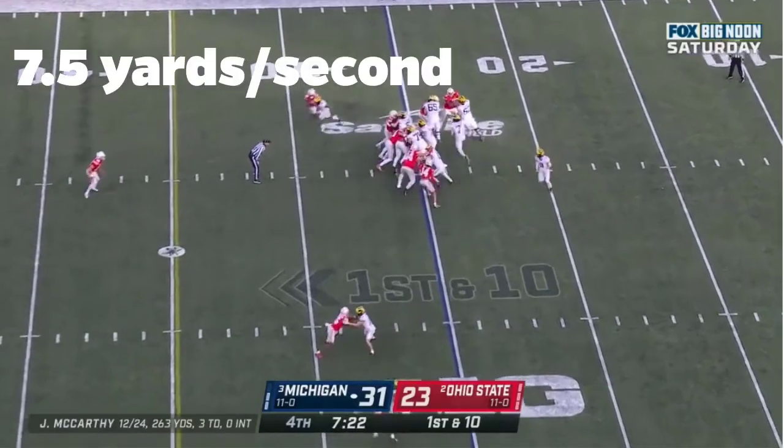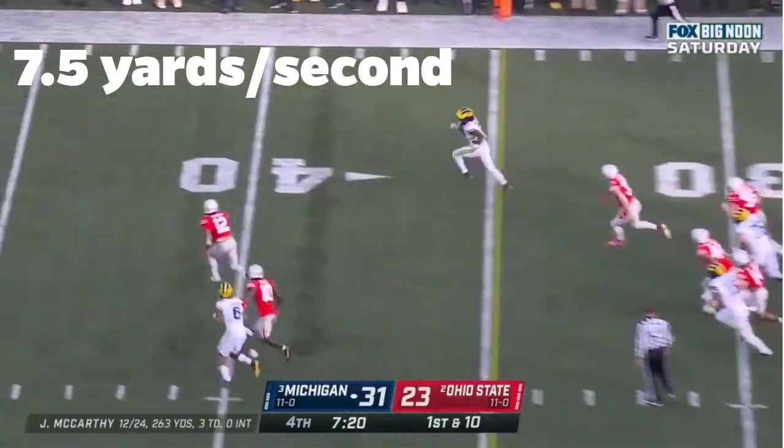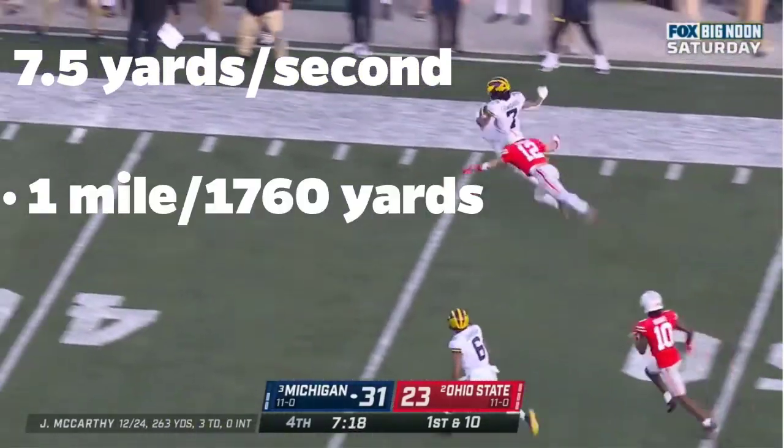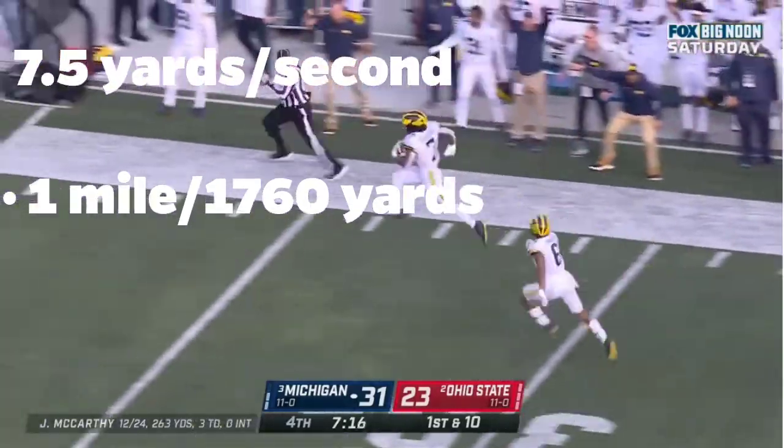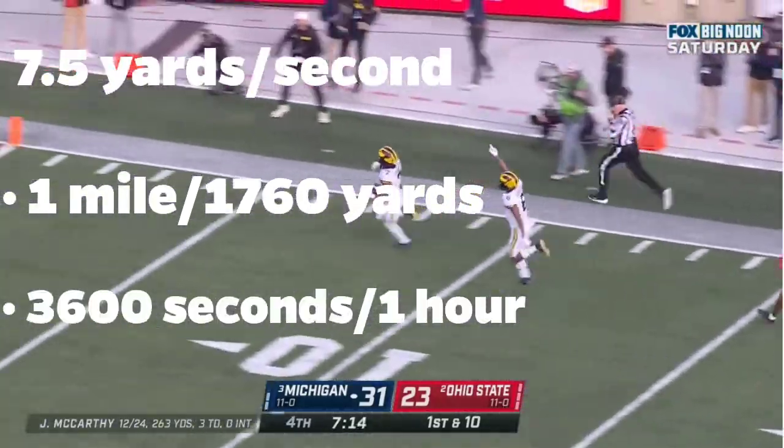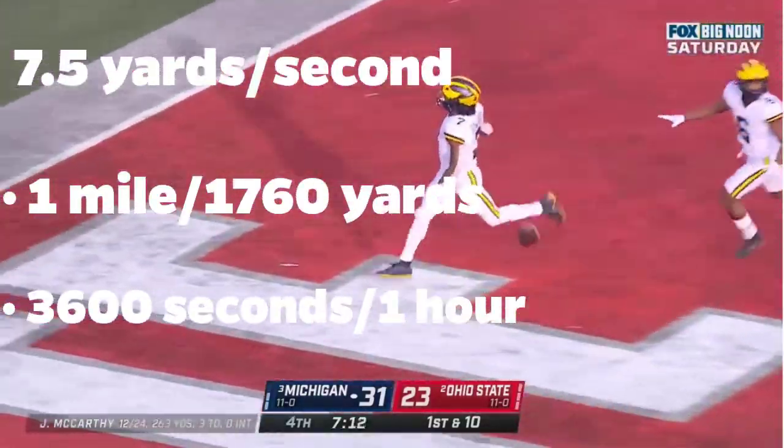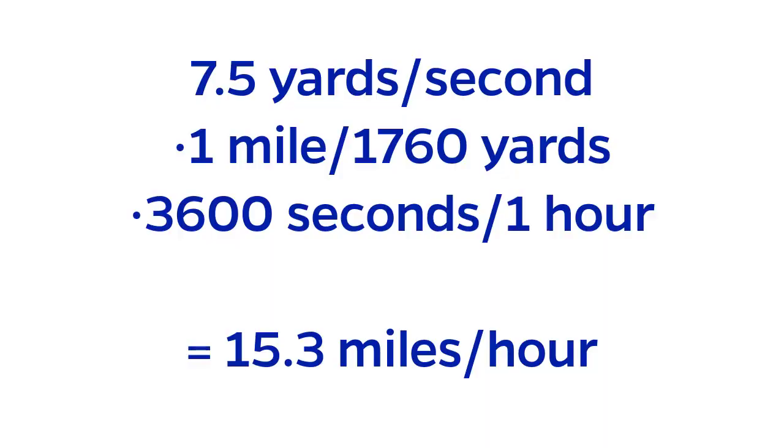Going back to Donovan Edwards, his velocity can be converted into miles per hour by noting that there are 1,760 yards in one mile and 3,600 seconds in one hour. Performing the conversion results in 15.3 miles per hour. When you convert units, make sure that you are doing it properly by canceling them out as you go.